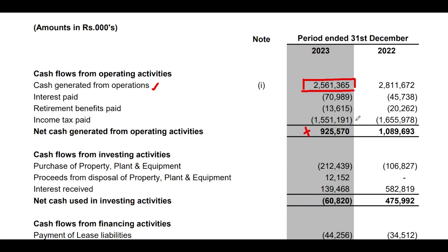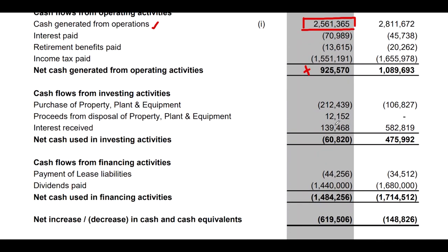You can add the investing activities to purchase. You can add the interest received. You can add the sale of the equipment. You can also add the minus sign.